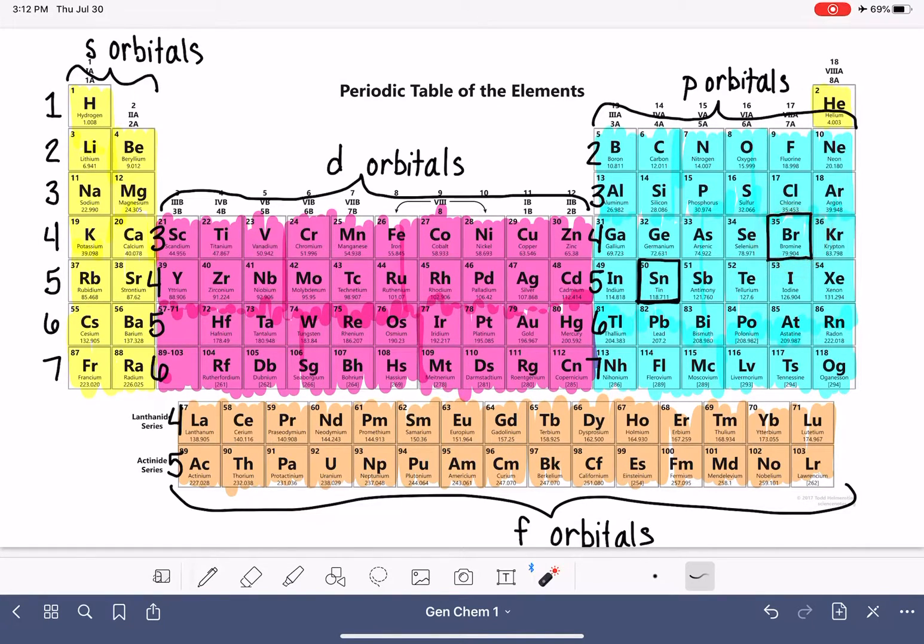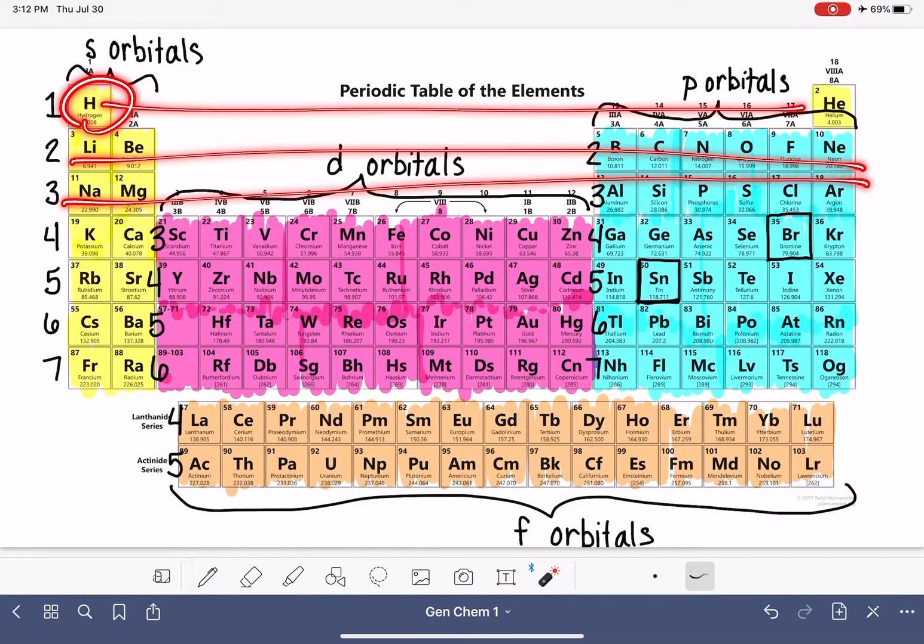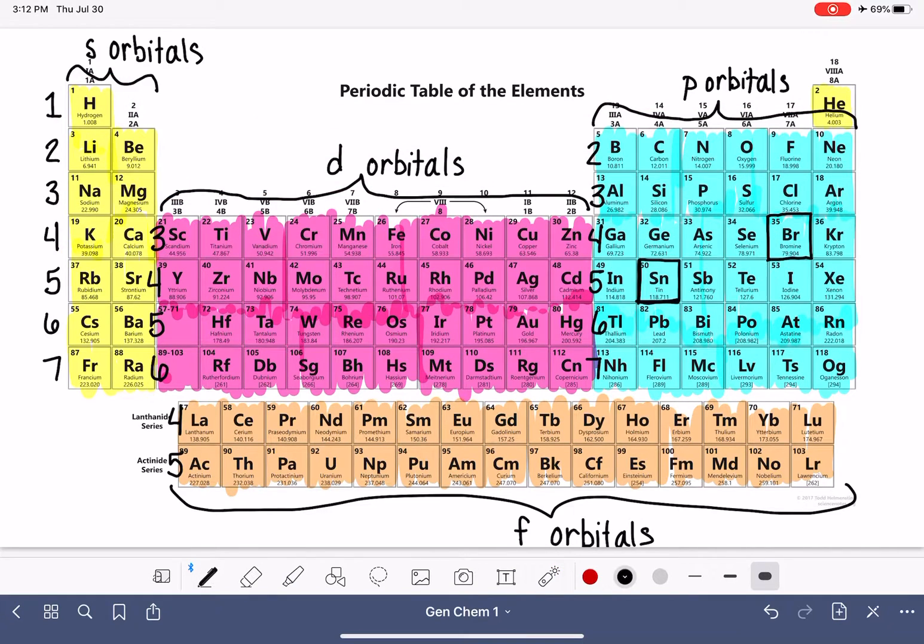Let's practice that with bromine. So we're going to start up here and we're just going to count our way across the periodic table until we get to bromine. Starting up here at the top, we go 1s one, two. I'm going to write this up here. Bromine is 1s² and then next we have 2s², 2s².